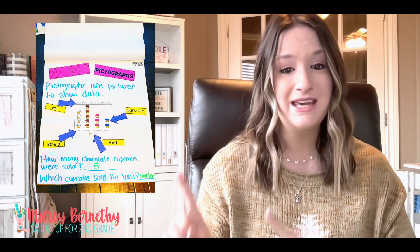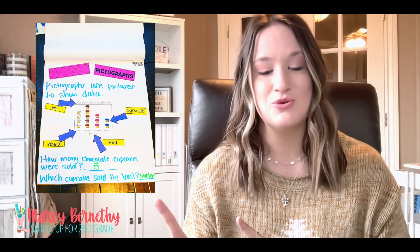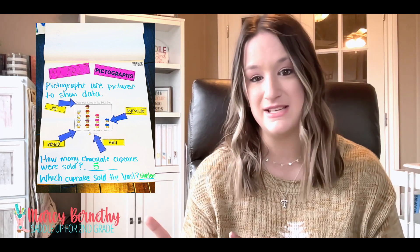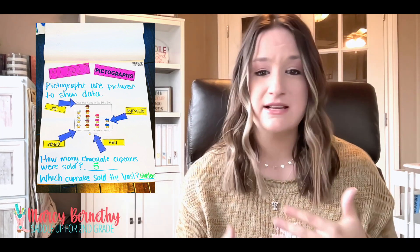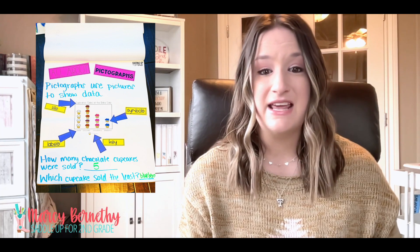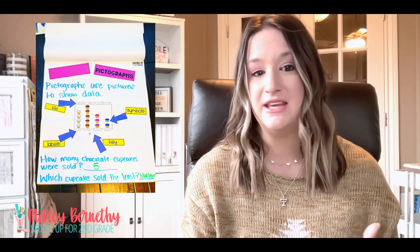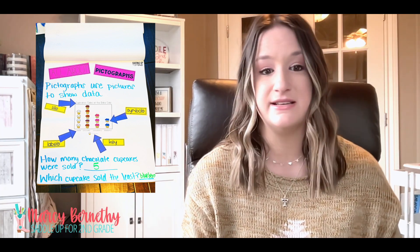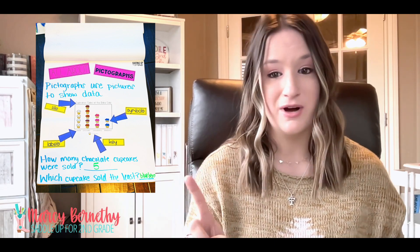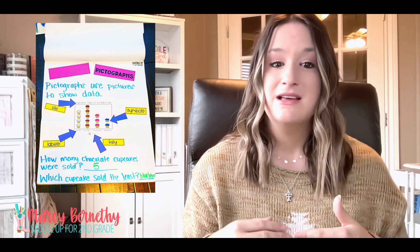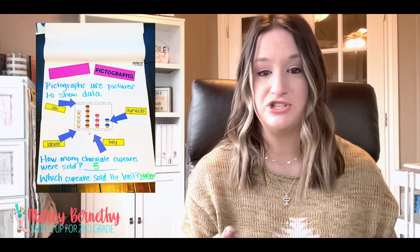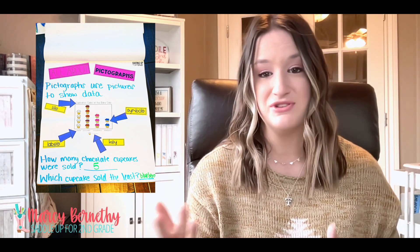Now the key — this explains what each symbol or picture on the graph represents. It's typically located somewhere at the bottom of a graph, and in this example the key represents the number one, so each cupcake represents one. Sometimes a key can be on a different scale, such as counting by twos, fives, or tens.